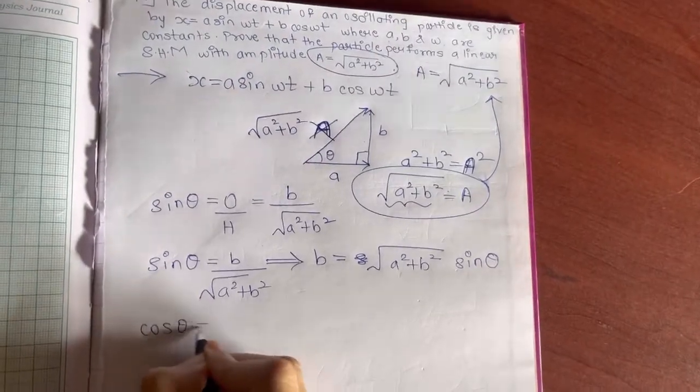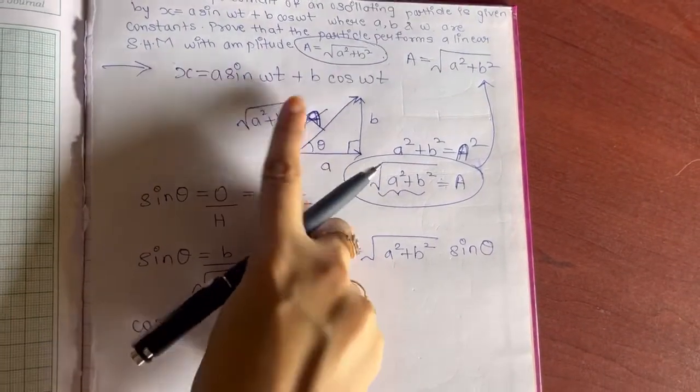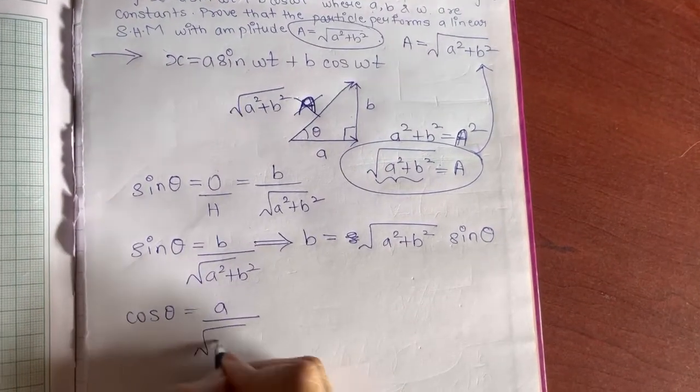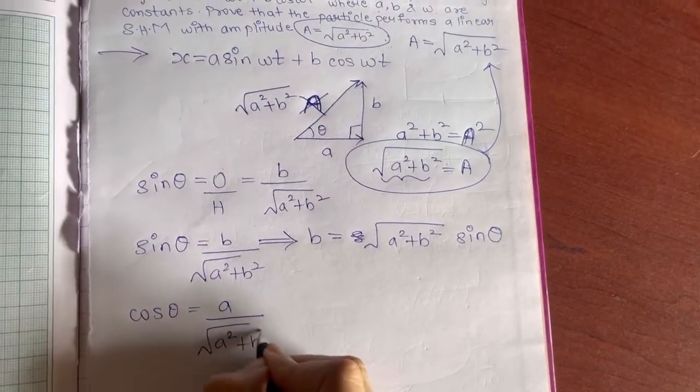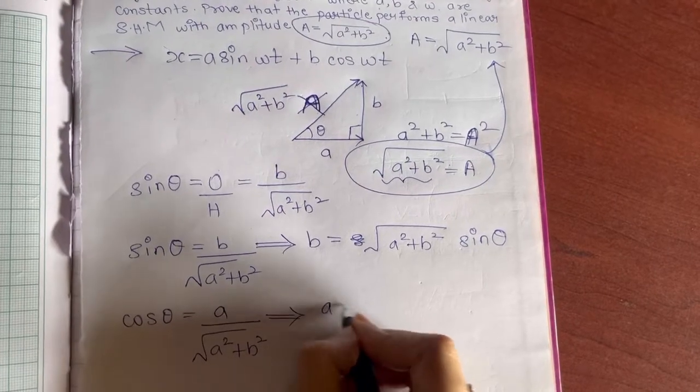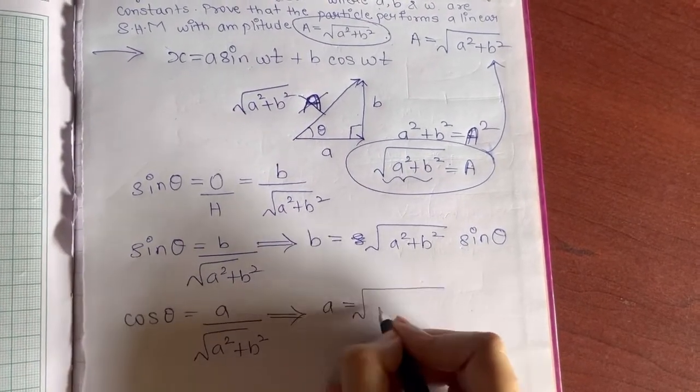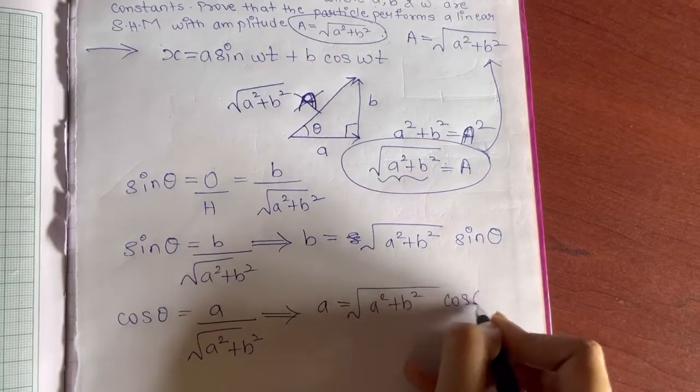Now you will move to cos θ, that is adjacent upon hypotenuse. Adjacent is small a, and hypotenuse √(a² + b²). So from here you will get the value of small a, that is √(a² + b²) cos θ.